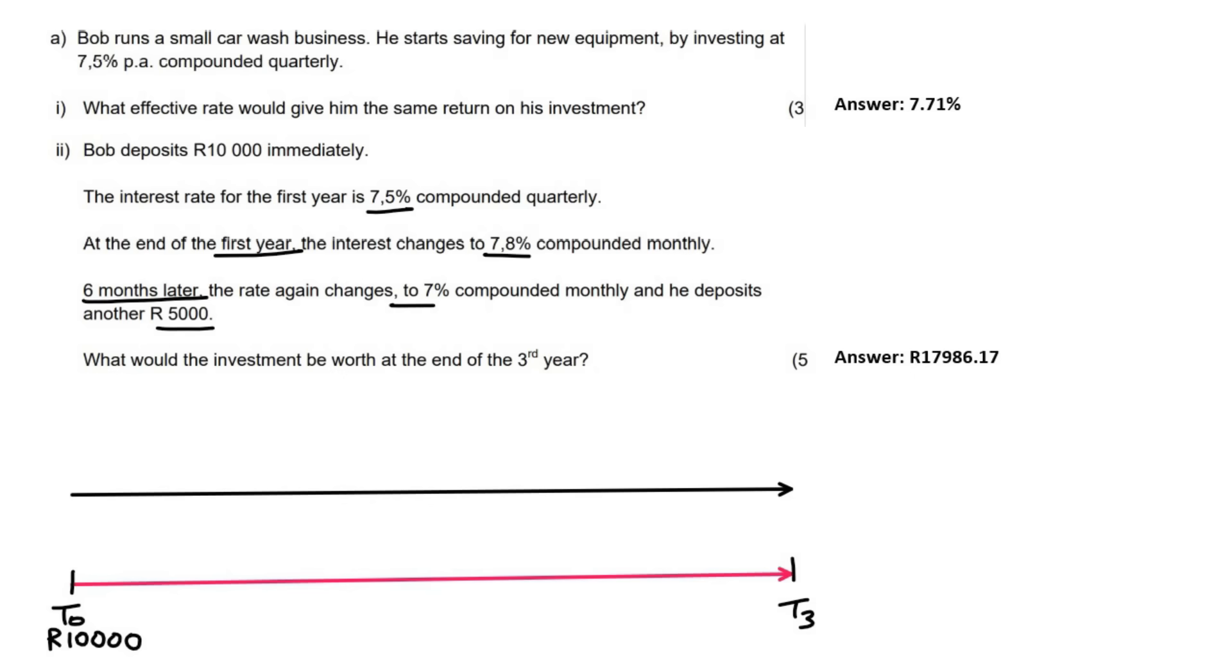It says that at the end of the first year, and then it says six months later. So that means after 1.5 years. So that'll be at T1.5, which is quite weird, at 1.5 years, because it was at the end of the first year they were talking over there, and then they said six months later. So they mean six months later than that part. He deposits 5,000 Rand. So we're going to add in 5,000 Rand over there.